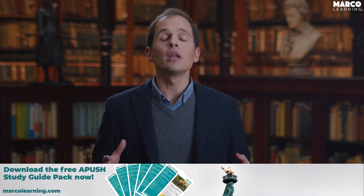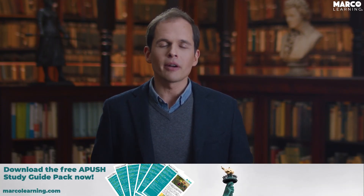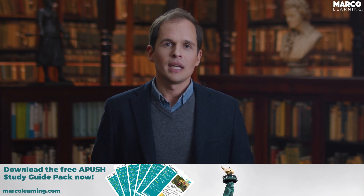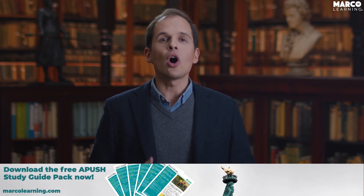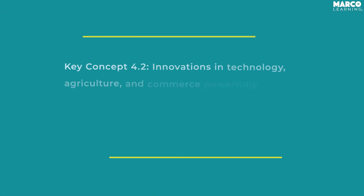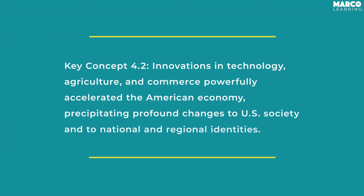Key Concept 4.1 was all about the new society Americans were building in the 1800s. Key Concept 4.2 is all about the economy. It says innovations in technology, agriculture, and commerce powerfully accelerated the American economy, precipitating profound changes to U.S. society and to national and regional identities.